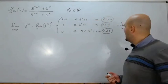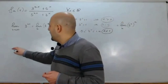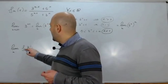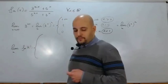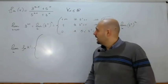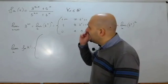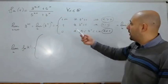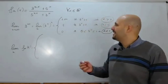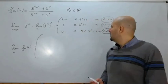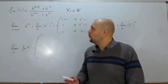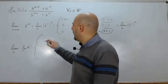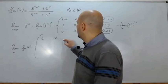Attenzione ai tre casi. Andiamo a vedere il caso x = 0: se x è 0, faccio notare che tendono a 1 sia 3^(nx) che 5^(nx), quindi abbiamo (1 + 5^0) / (1 + 3^0) = (1+1)/(1+1) = 2/2 = 1. Abbiamo quindi che la nostra funzione limite vale 1, nell'ipotesi che x sia proprio 0.